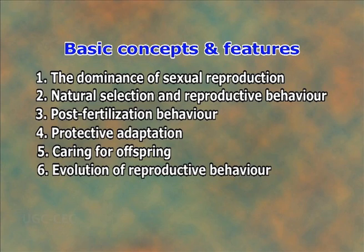In some animals this involves not only protecting the young against environmental vicissitudes and providing them with adequate nutrition, but also giving them in a more or less active manner the information they will need to reproduce in turn. Number 3: Post-Fertilization Behavior. Various types of behavior ensure that a maximum number of fertilized eggs or young will survive to become reproductive adults.